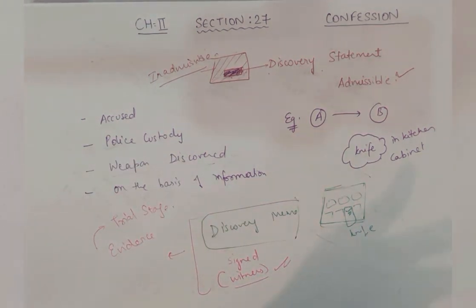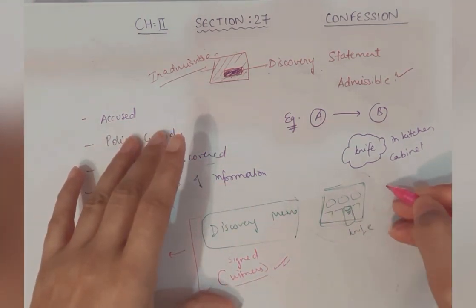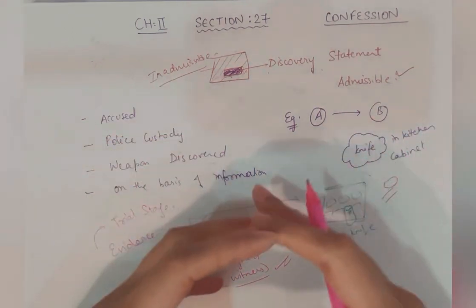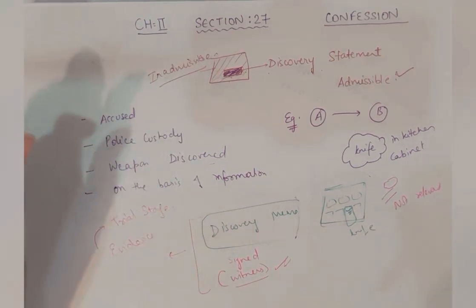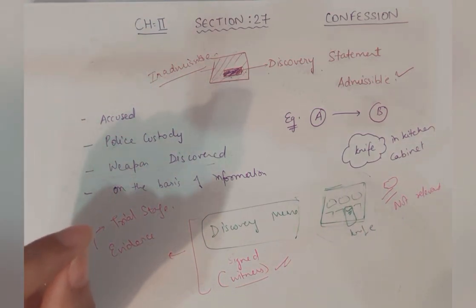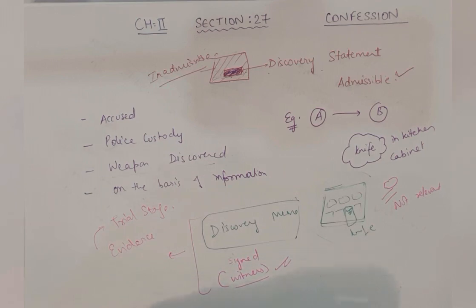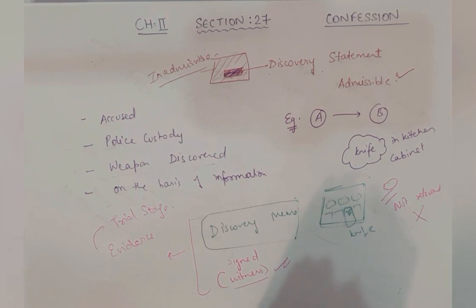If there is a doubt that police found the object otherwise — not by information of the accused — matlab police ko doubt tha ki wahan par mil sakti hai, but in actual wahan par mil gai, but woh information accused ki nahi thi. Police ko mili during checking or during investigation, but information accused ne nahi di thi — wahan par kya ho jayega? Note: not relevant. The basis of relevancy is that discovery of the object is made by information of the accused. If it can be proved somehow that police may have got information of the object on the basis of some independent source — not on the information of the accused — agar yeh prove ho jayega ki police ko information kahin aur se mili thi instead of accused ne di, then the relevancy of that discovery statement is lost — woh relevant nahi hoga.